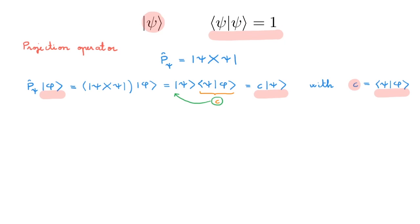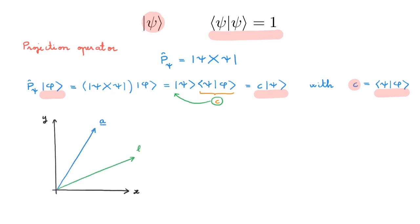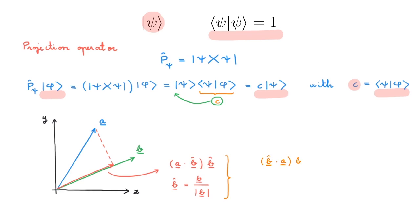We can draw a simple analogy with what happens in the familiar Euclidean vector space. In two dimensions, the Euclidean vector space is spanned by x and y. If we consider two vectors A and B, then the projection of the vector A onto the vector B is this vector shown here in red. We can calculate it as A·B̂ in the direction of the B vector, where B̂ is the unit vector in the B direction. What we get after projecting A on B is a vector along B whose length is the scalar product of A with B. This is analogous to what we get after projecting |Phi⟩ on |Psi⟩, which is the state along |Psi⟩ with length given by the scalar product between |Psi⟩ and |Phi⟩.